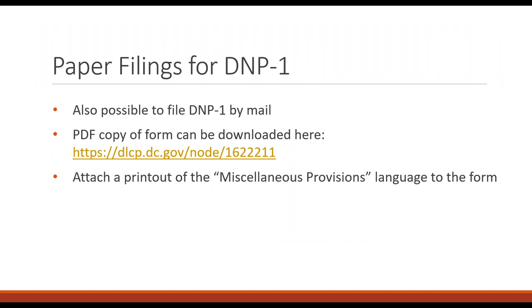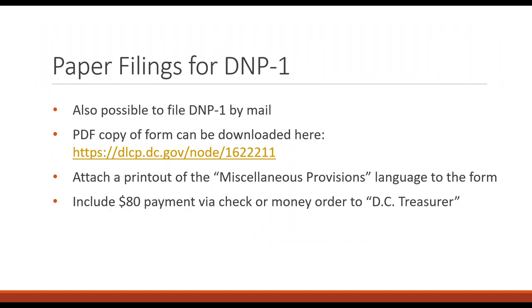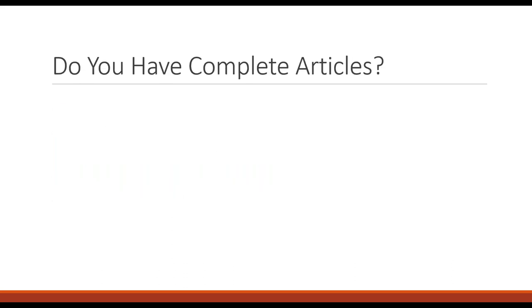There is also an option to file a paper DNP-1 by mail — there's a link to download a PDF. If you do that, you print out your miscellaneous provisions on a separate piece of paper and mail everything in with $80 to the DC Treasury.